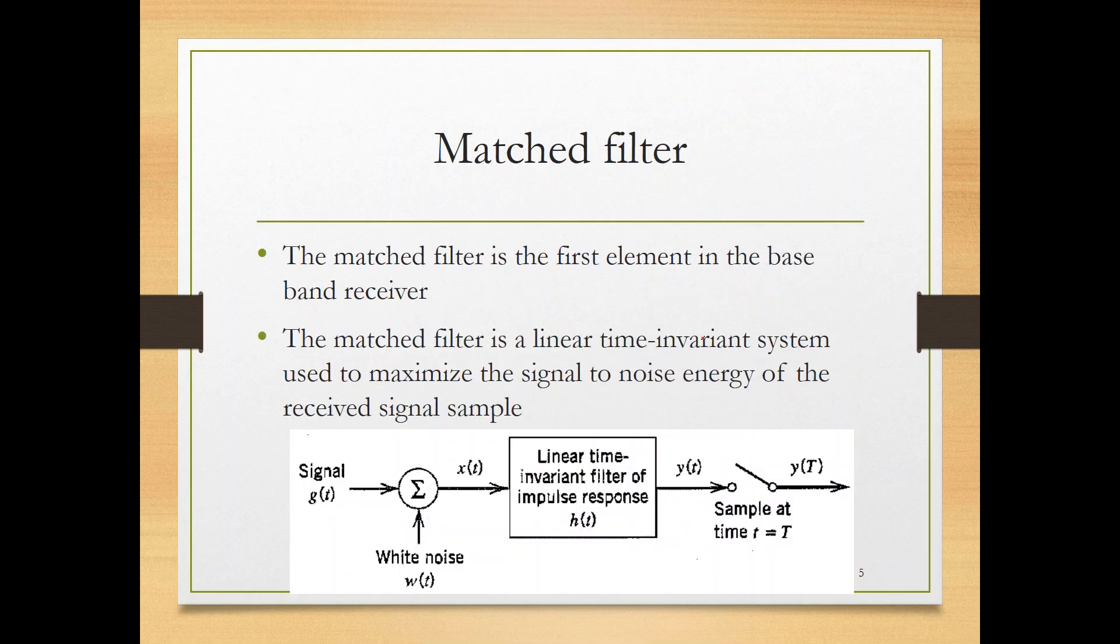So the matched filter, which is the basic concept I want you to understand and learn, is basically the first element in the baseband receiver. After you receive your signal and get it from the antenna and from the RF front end and go to the baseband, you will have the receiver. We call it matched filter. The matched filter is the linear time-invariant system.